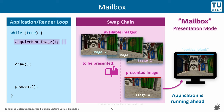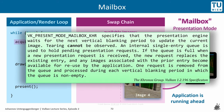The specification states: VK_PRESENT_MODE_MAILBOX_KHR specifies that the presentation engine waits for the next vertical blanking period to update the current image. Tearing cannot be observed. An internal single-entry queue is used to hold pending presentation requests. If the queue is full when a new presentation request is received, the new request replaces the existing entry, and any images associated with the prior entry become available for reuse by the application. One request is removed from the queue and processed during each vertical blanking period in which the queue is non-empty.